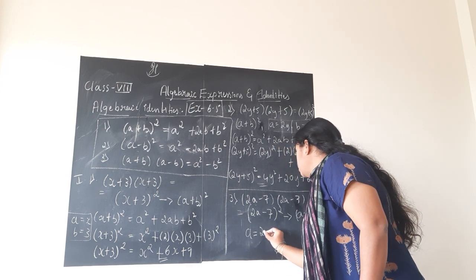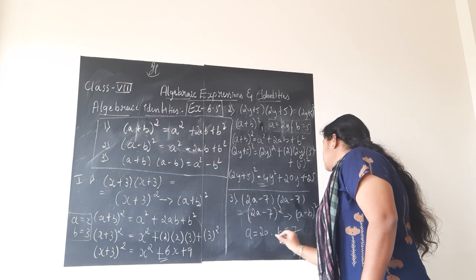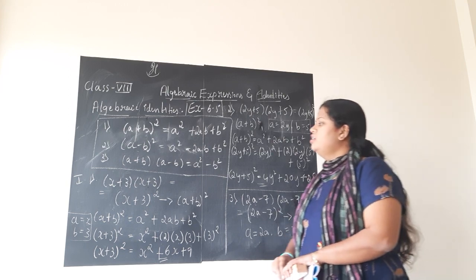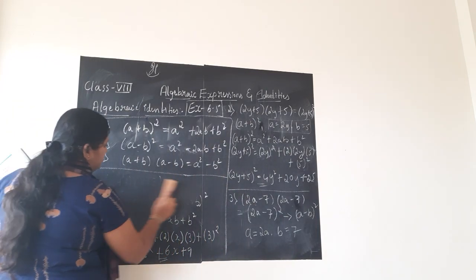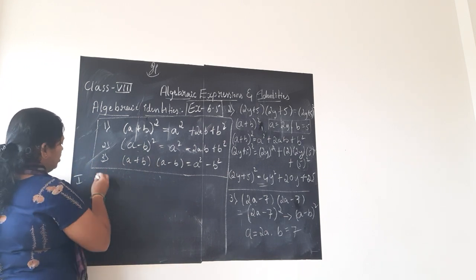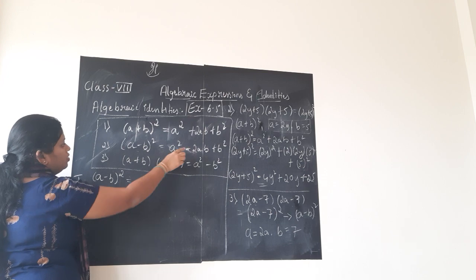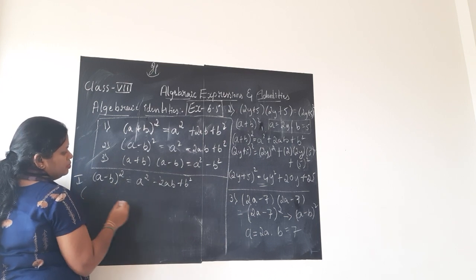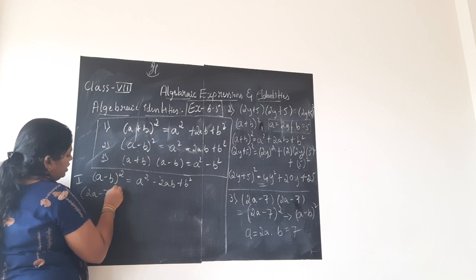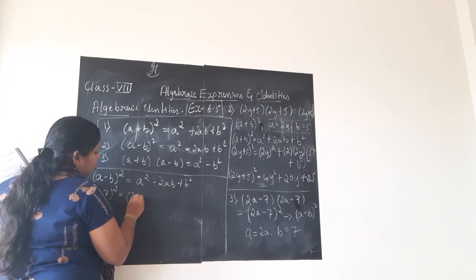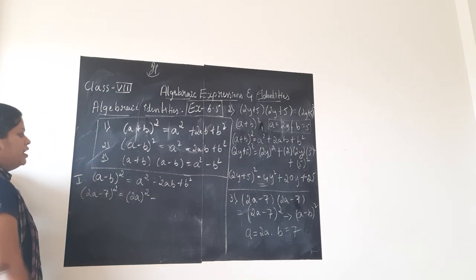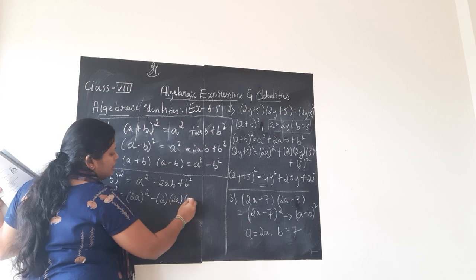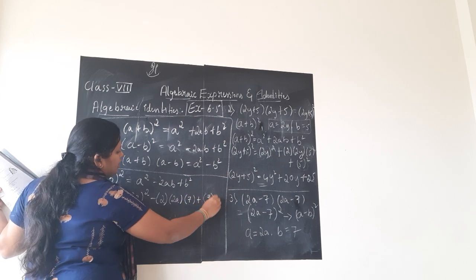2a minus 7 is of the a minus b whole square form, where our a value is 2a and b value is 7. Compare: in place of a, what do you have? 2a. In place of b? 7. The identity a minus b whole square equals a squared minus 2ab plus b squared. In place of a minus b whole square, I have 2a minus 7 whole square. So a squared becomes 2a whole square, minus 2 into a (which is 2a) into b (which is 7), plus b squared which is 7 squared.